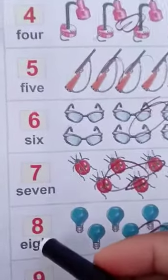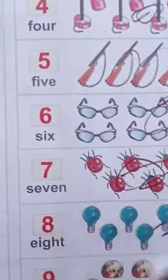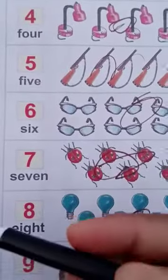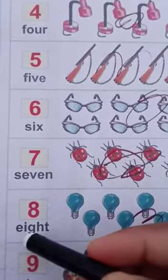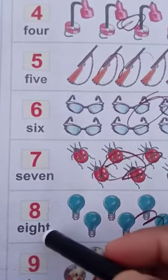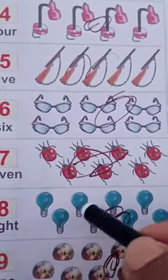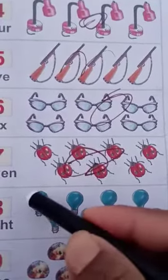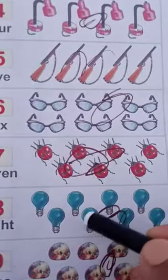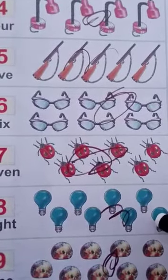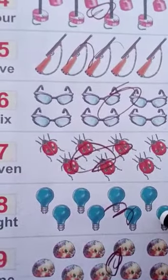Next, eight. E-I-G-H-T, eight. Here are eight bulbs: one, two, three, four, five, six, seven, eight. Here are eight bulbs.